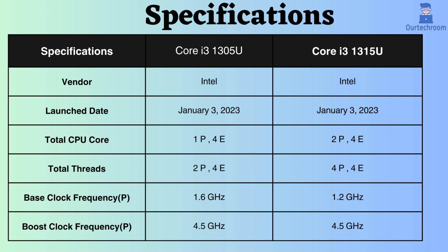The base clock frequency for the performance core of the Intel Core i3-1305U is 1.6 GHz, whereas for the Core i3-1315U it is 1.2 GHz. Both of these processors have a boost clock frequency of 4.5 GHz, which is suitable for general thin and light laptops.